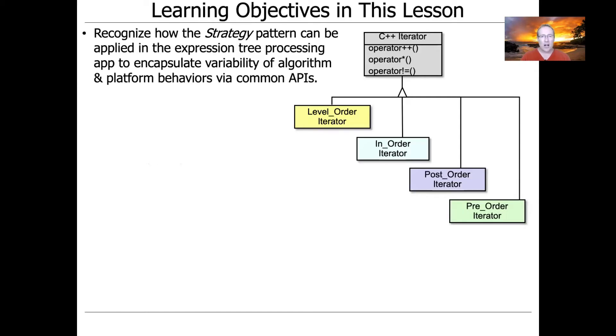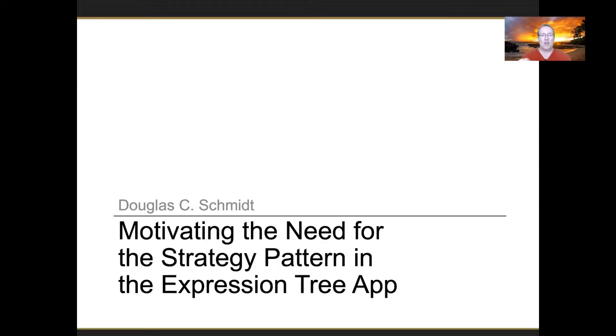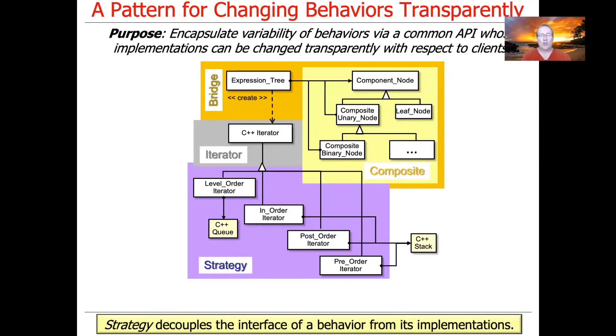So as usual, let's go ahead and talk about how we apply the strategy pattern in order to aid encapsulation of variability of algorithm and platform behaviors via common application programming interfaces. So we're going to use this to change behaviors transparently. The idea is to keep the source code fixed from a client perspective, from someone using the abstractions. And then we're going to change the behavior without changing the client code.